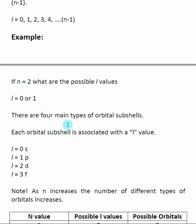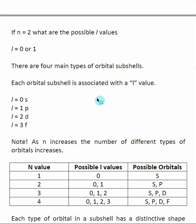Technically there are four types of orbital subshells, and when we look at the periodic table there are really only four. Instead of discussing them by their l value, we assign them a letter. When l equals zero, the orbital is called s; when l equals one, it's p; l equals two is d; and l equals three is f. These are the different types of orbitals that can exist inside an atom, each with different shapes and properties.